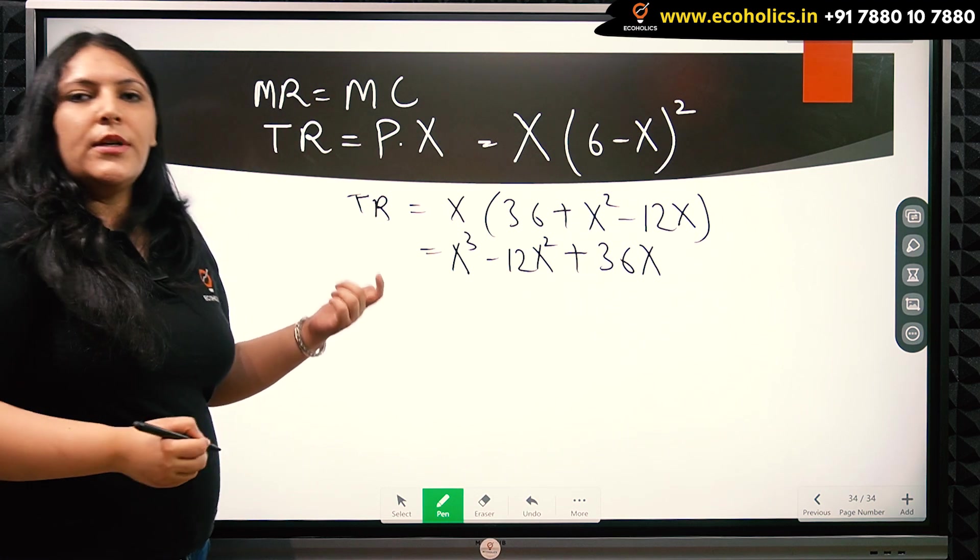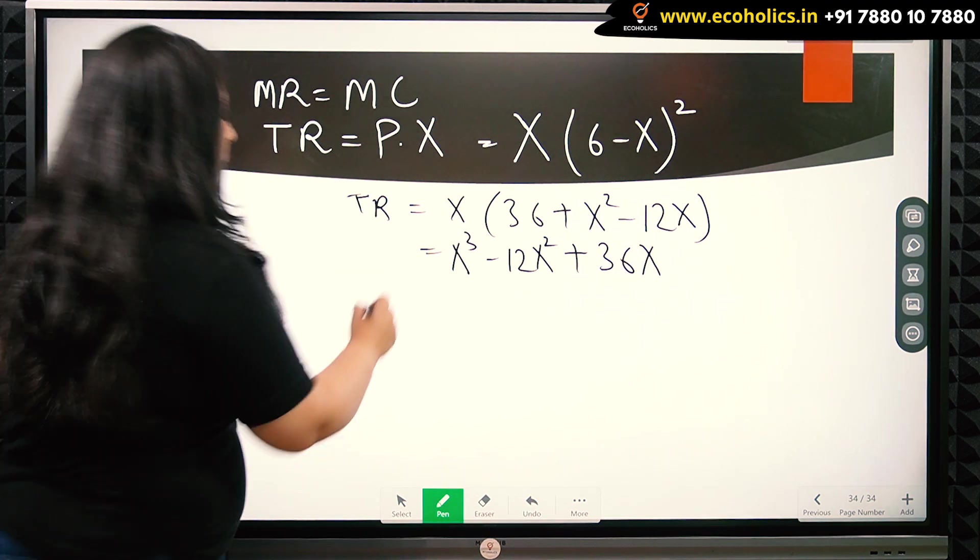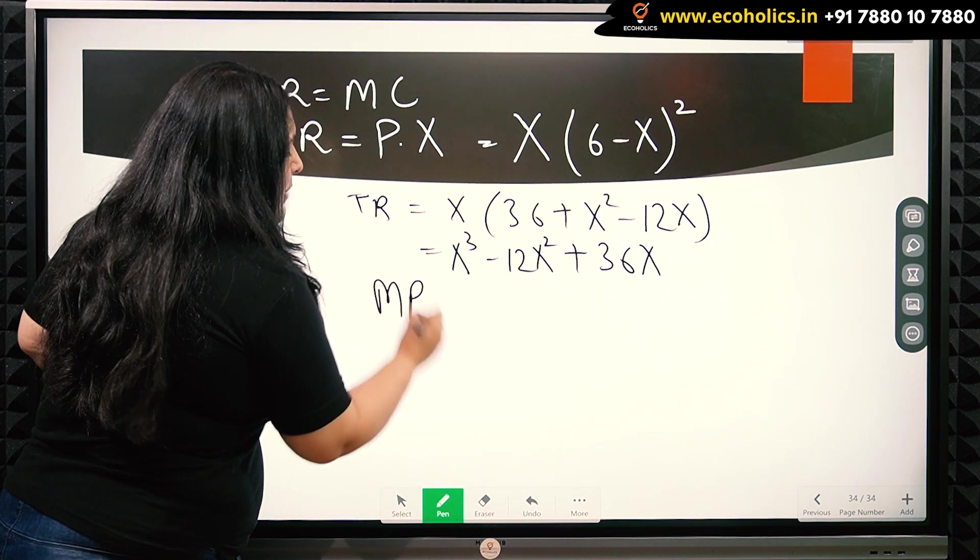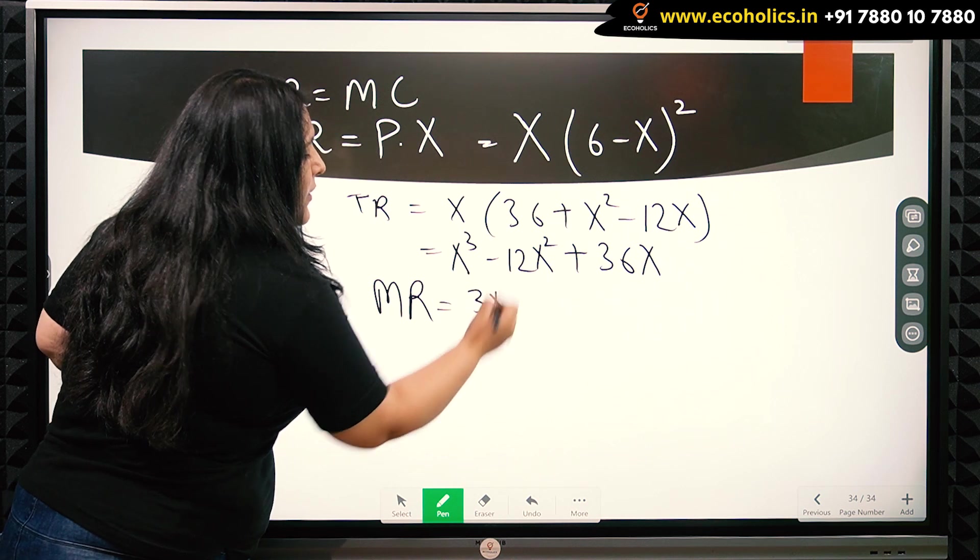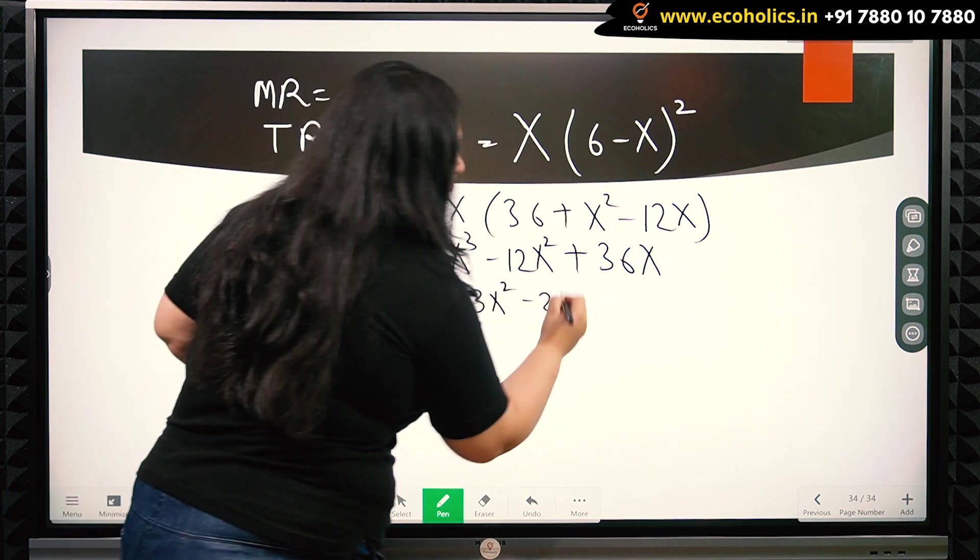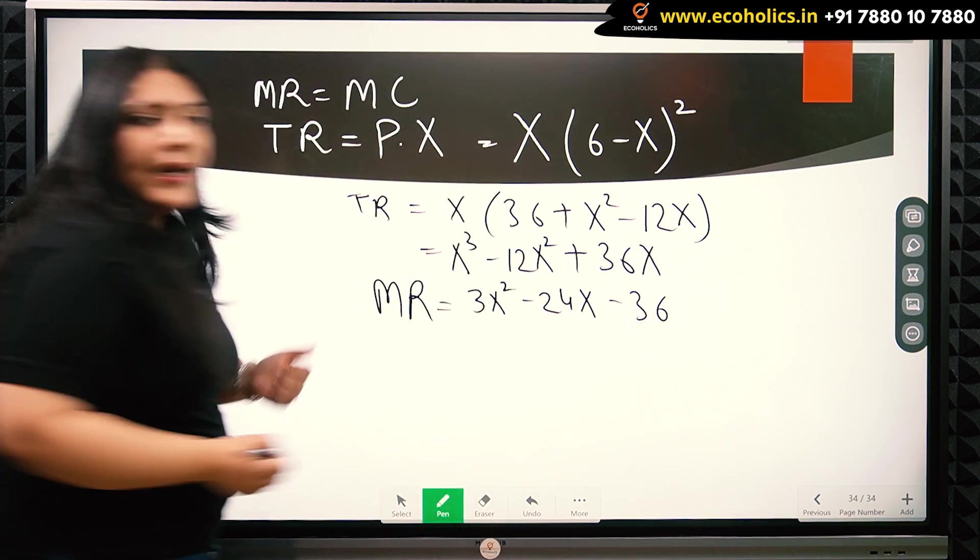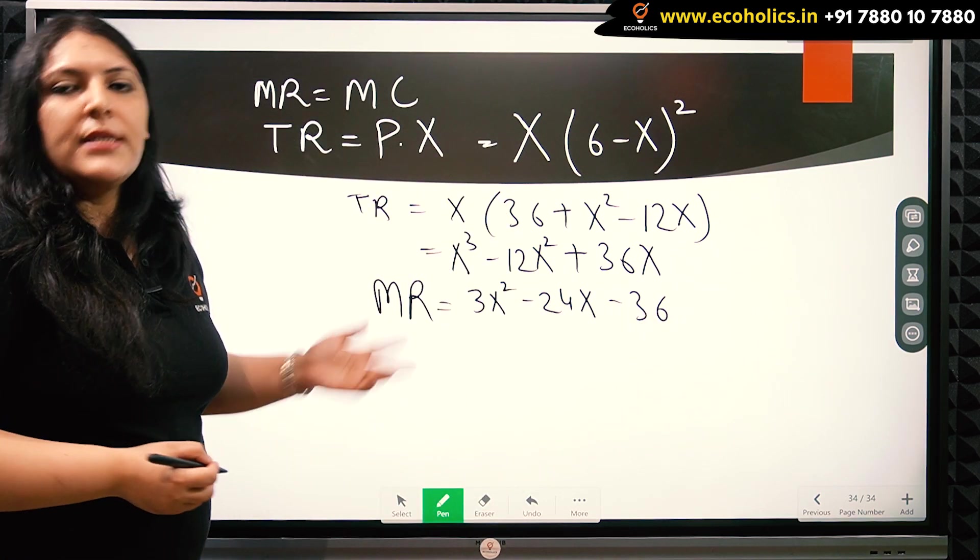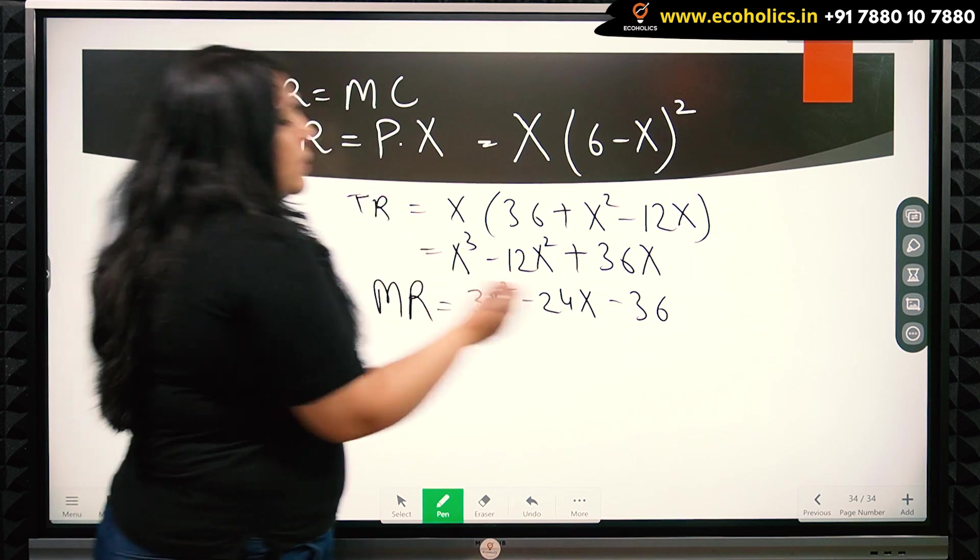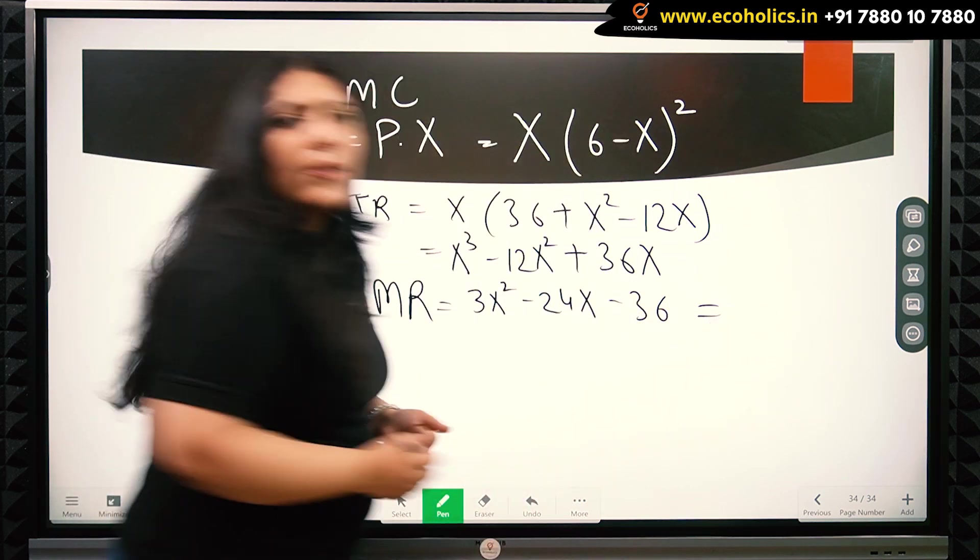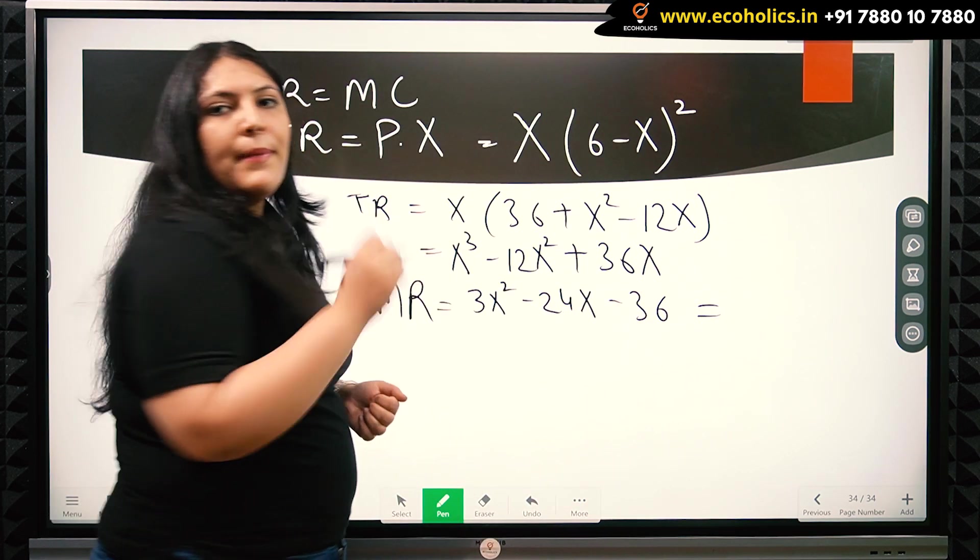From this total revenue, we can find out the marginal revenue. MR comes out to be 3x² - 24x + 36. At equilibrium, this marginal revenue must equal the marginal cost. So the marginal cost was given at 14 + x.